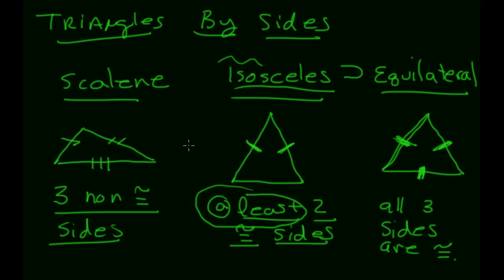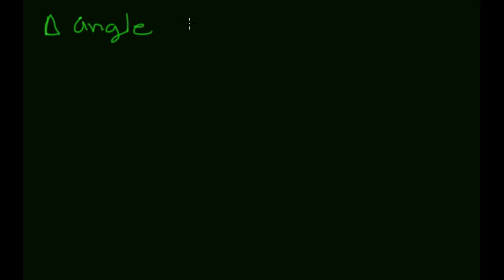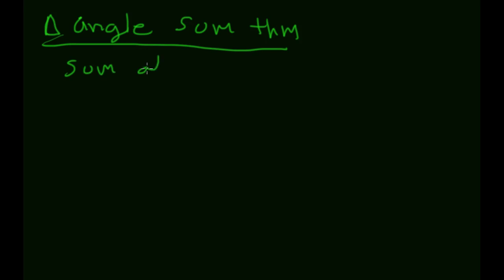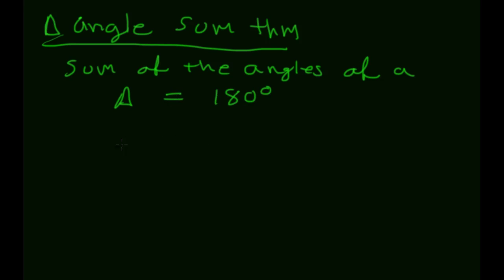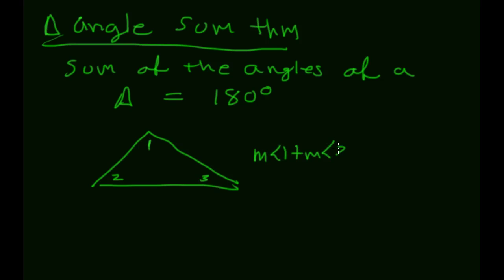We're going to talk about the Triangle Angle Sum Theorem, which simply states that the sum of the angles of a triangle add up to 180 degrees. So if a triangle has angle one, angle two, and angle three, then the measure of angle one plus the measure of angle two plus the measure of angle three must equal 180.